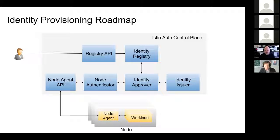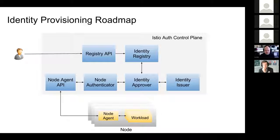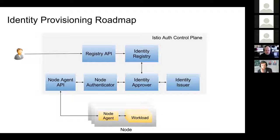Here's our plan for identity provisioning in the next release. All secrets will be generated by the control plane and delivered to the workload via a node agent. In the control plane, we have six components. The registry API is for admin or orchestrator to register identity to the identity registry. At runtime, the node agent sends the CSR for the workload to the control plane via the node agent API. An authenticator validates the credential in the CSR, then checks the identity registry, and finally the identity issuer signs the certificate and sends it back to the node.